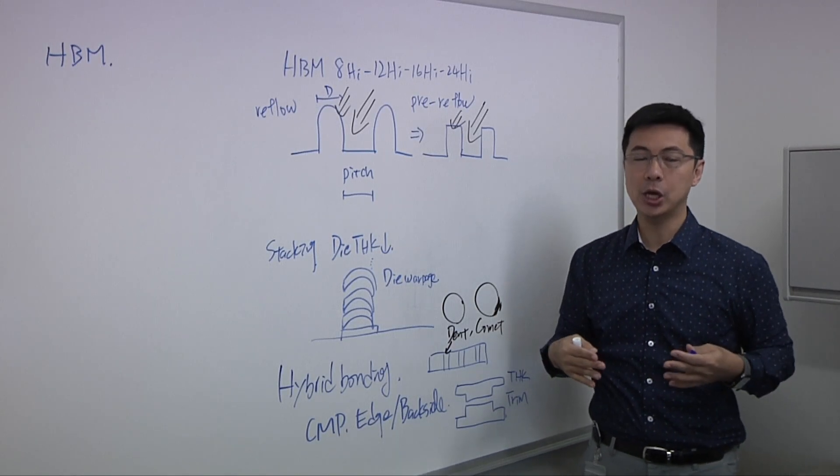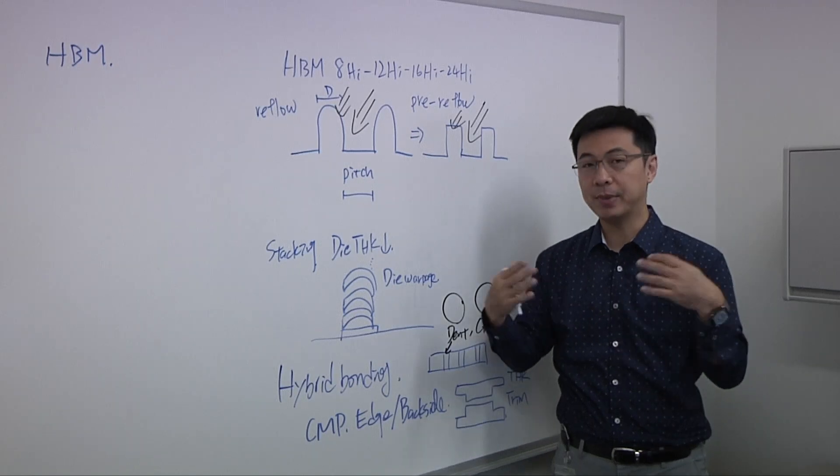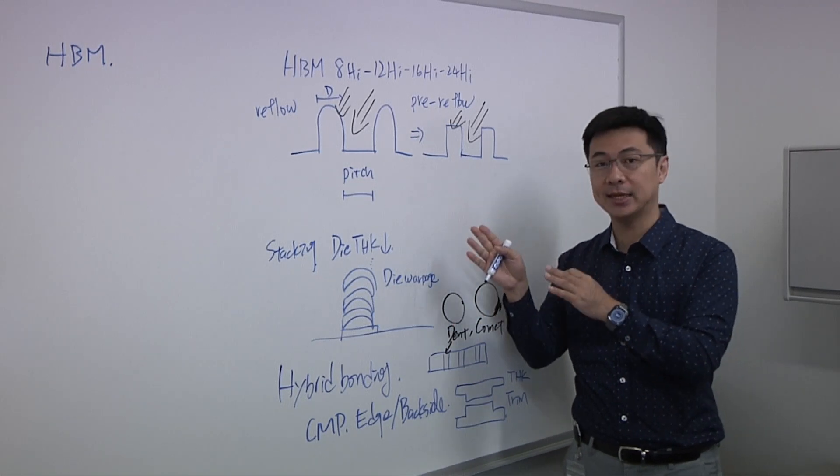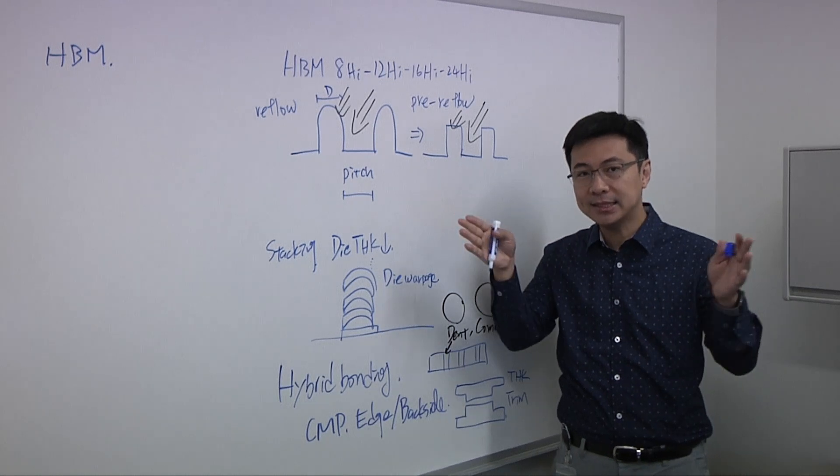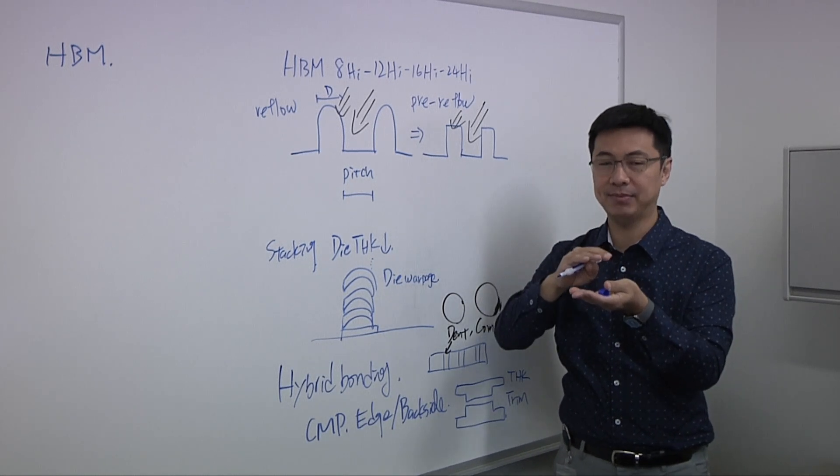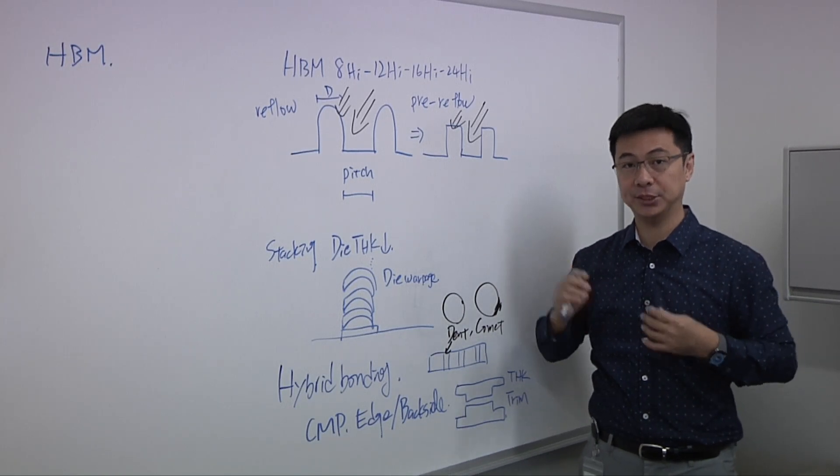this is the reflow and this is a micro-bump. So what we see is that both the bump pitch and the bump size continue to shrink. I think in the past, we were still seeing like 20-micron pitch and 10-micron diameter, even 20-micron bump height. But I think once we moved to 12 or even 16, we already see the bump pitch less than 10-micron, and even the bump height shrinks from 20-micron down to less than 10-micron. And actually, that's been a lot of challenge for defect inspection.